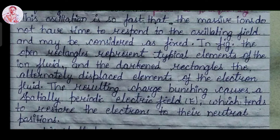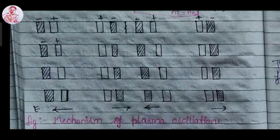These oscillations are very fast so that the massive ions do not have time to respond to the oscillating field and may be considered as fixed. In the figure you can see the rectangle represents the typical elements of the ion fluid and the darkened rectangle the alternate displacement elements of the electron fluid. The resulting charge imbalances cause a spatially periodic electric field E which tends to restore the electrons to their initial position.